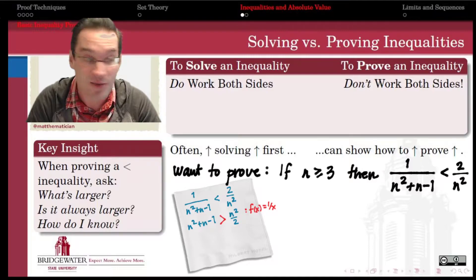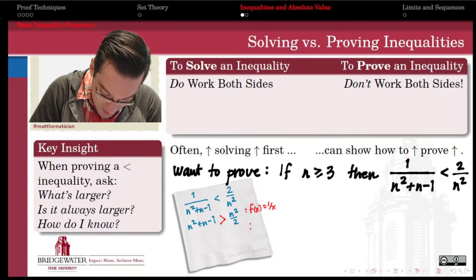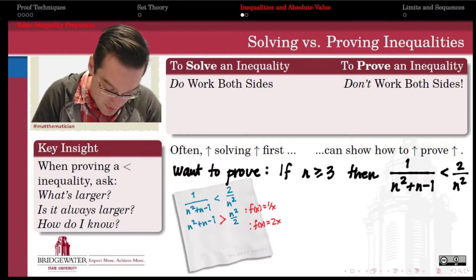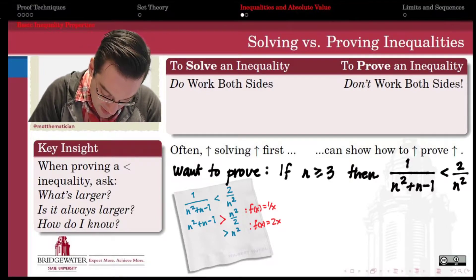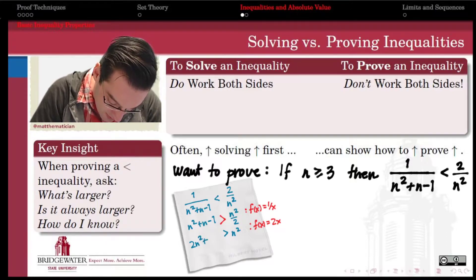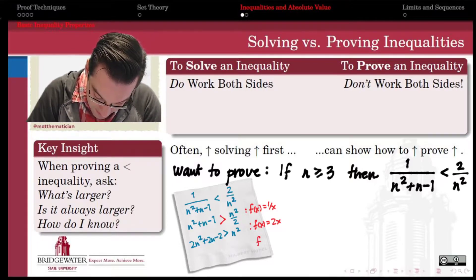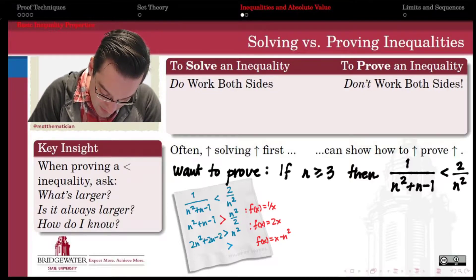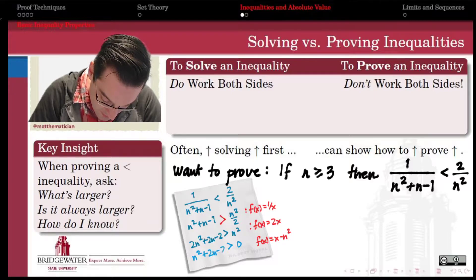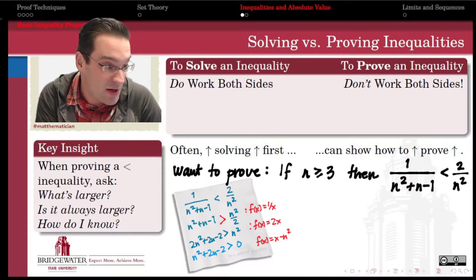Continuing with the solution: now I'll just multiply both sides by 2. I'll apply the function f(x) = 2x to both sides just to cancel the 2 in the denominator. Since that's an increasing function, I don't need to reverse my inequality. The right-hand side becomes n squared. The left-hand side is 2n squared plus 2n minus 2. Then I'll subtract n squared from both sides — that's an increasing function as well — so I get 0 on the right and n squared plus 2n minus 2 on the left.